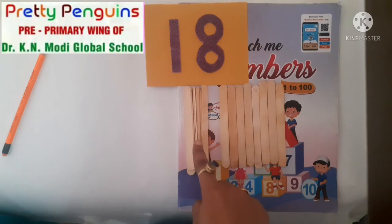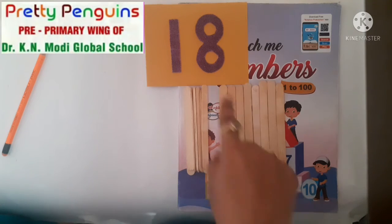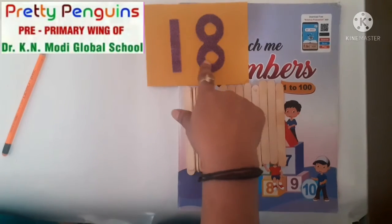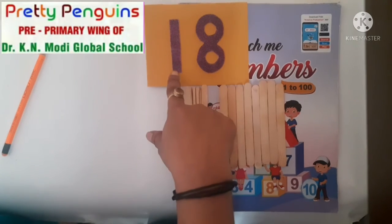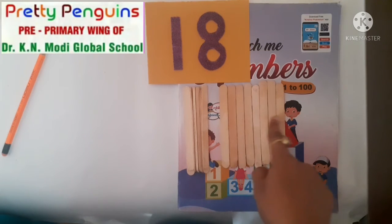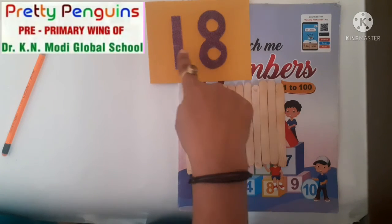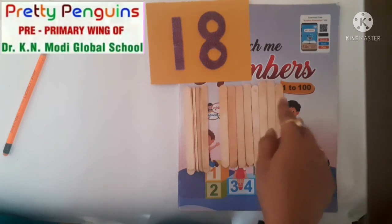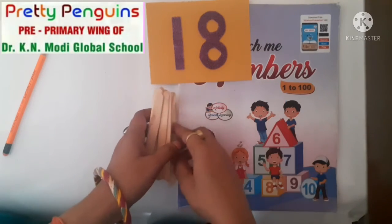So kids, 10 plus 8 is equal to 18. For 10s we write 1, and there are 8 ice cream sticks, so we write 8. 1, 8 — 18.